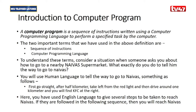We define first what is a computer program. A computer program is a sequence of instructions written using a computer programming language to perform a specific task by the computer. From that definition we see two important terms: sequence of instructions, and computer programming language.